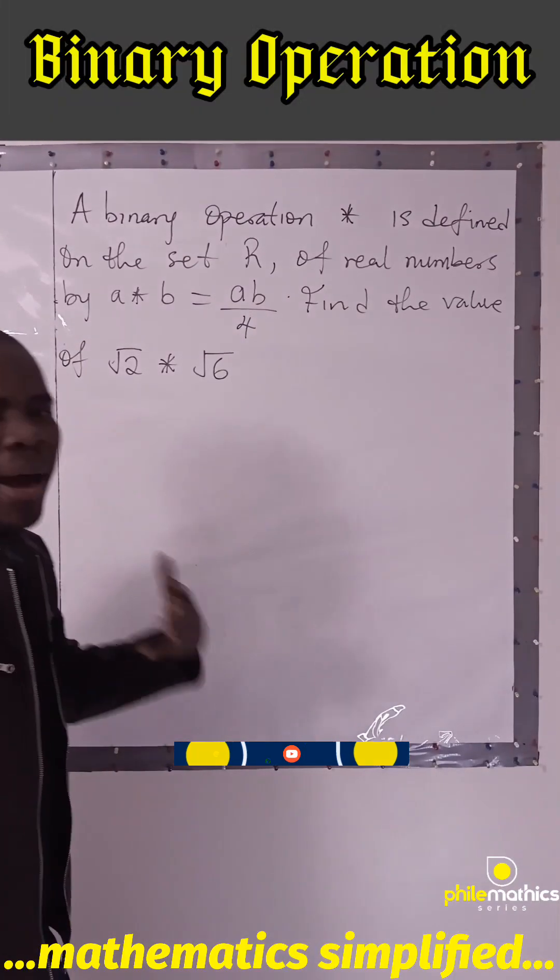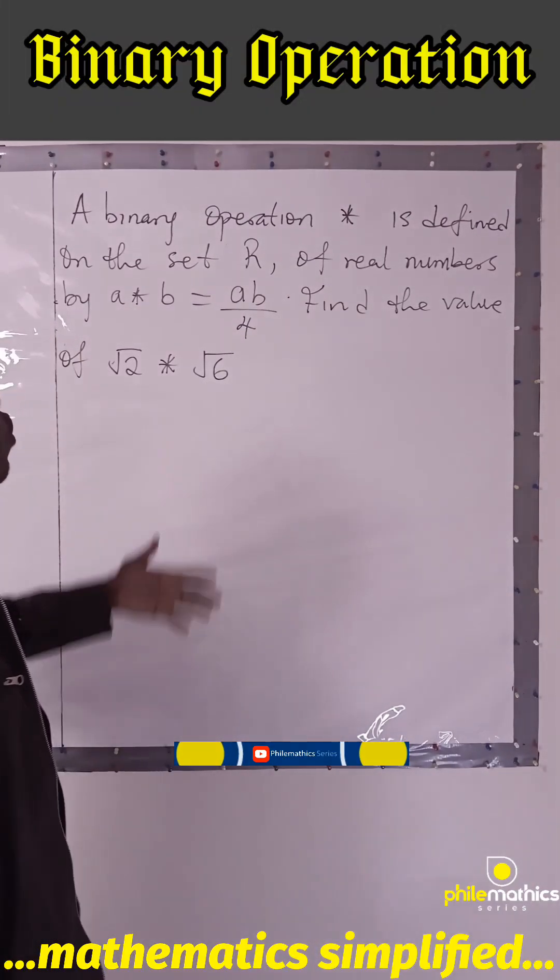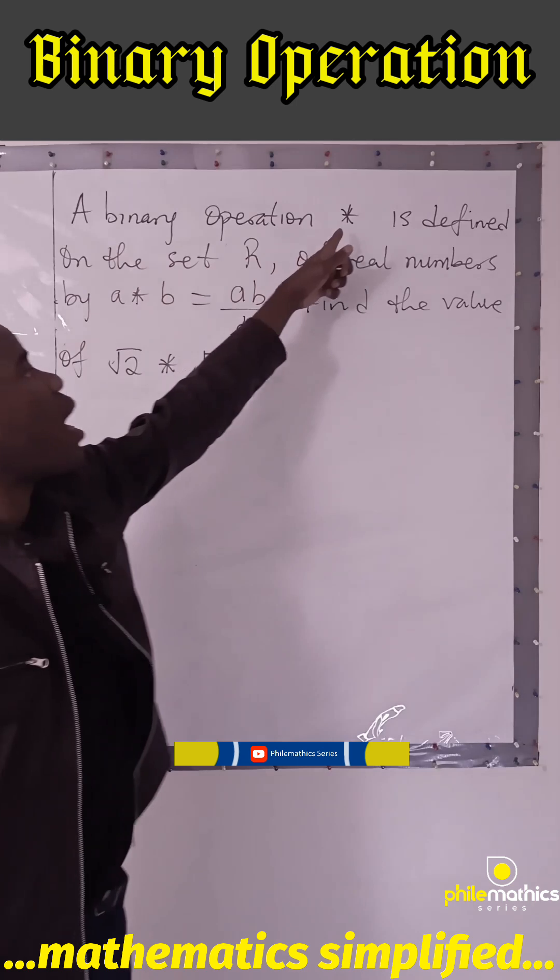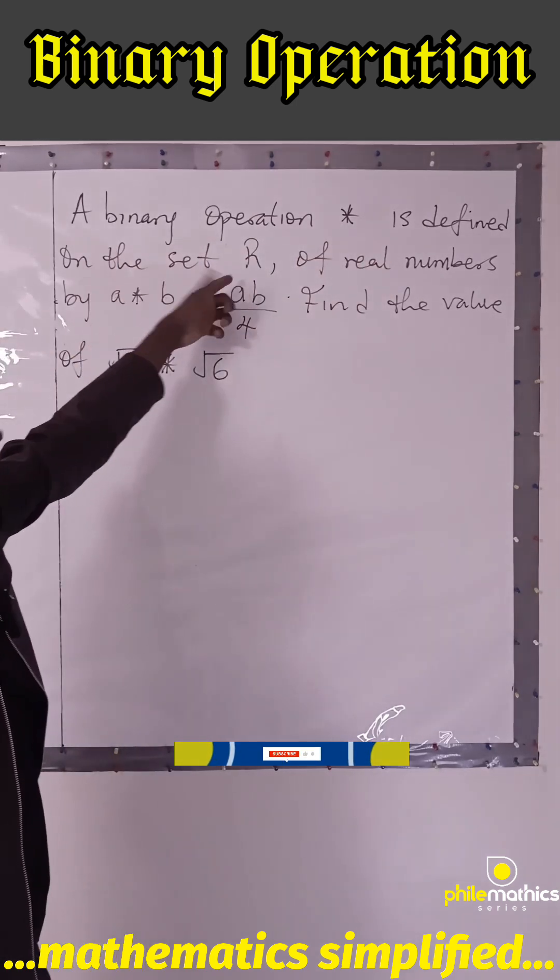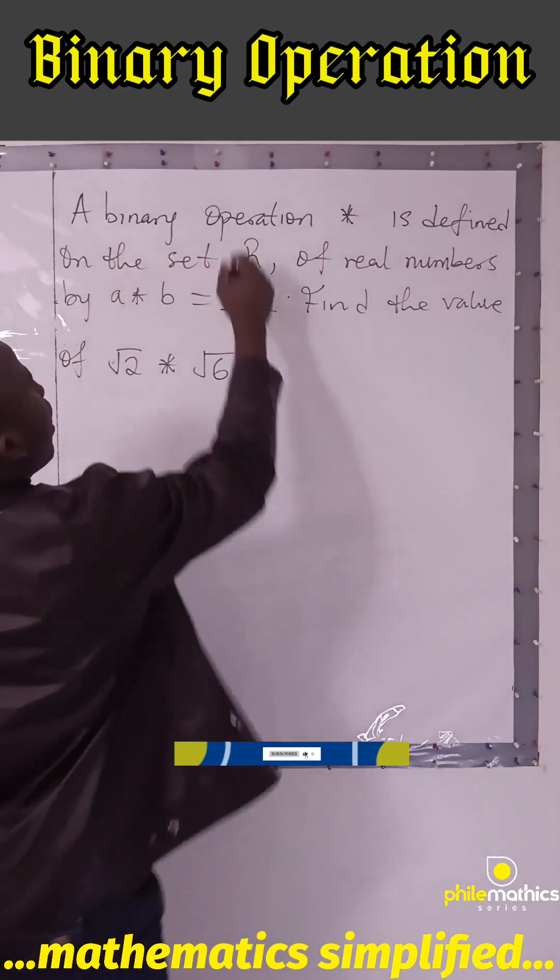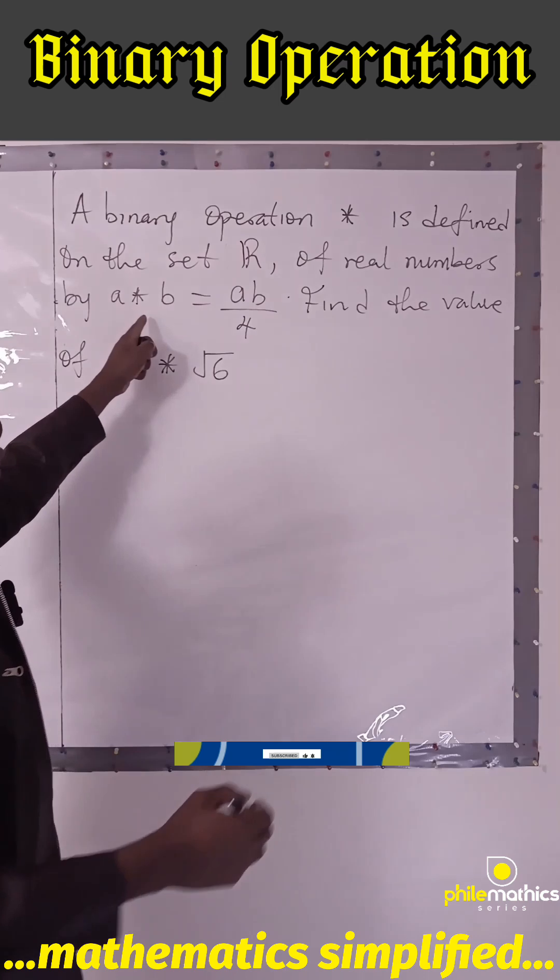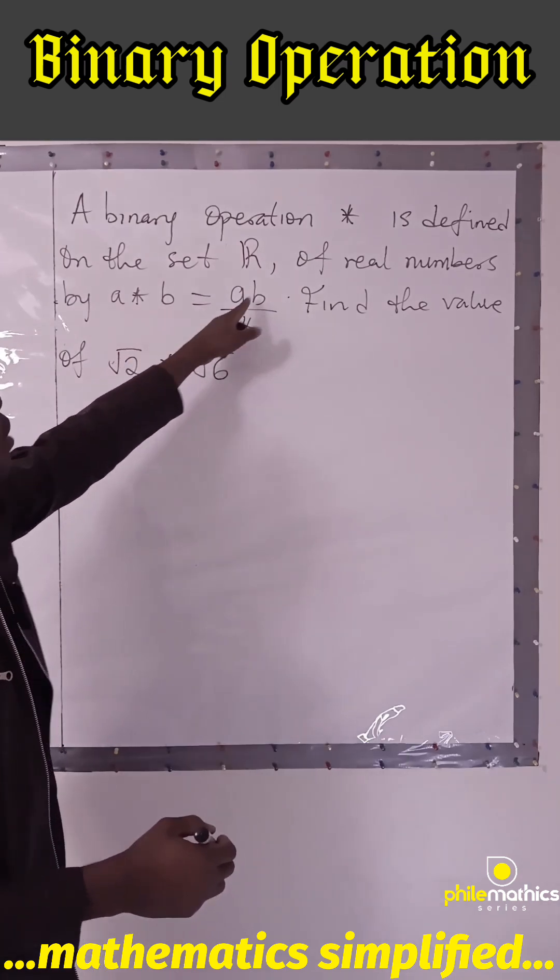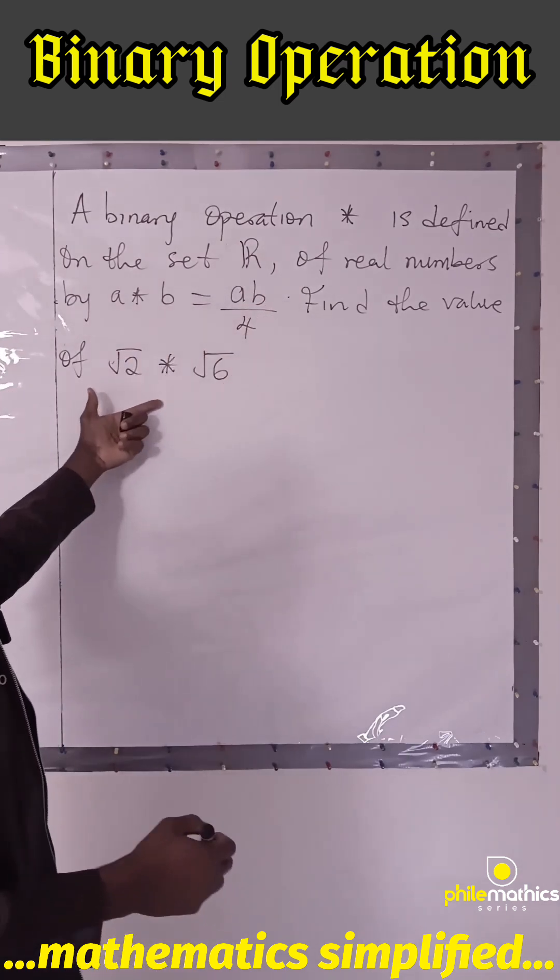This is a question on binary operations. A binary operation star is defined on a set of real numbers as a * b = ab/4, and we need to find the value of root 2 * root 6.